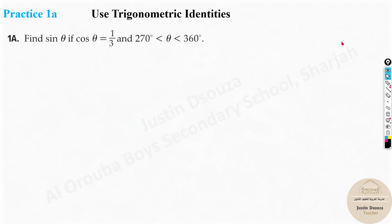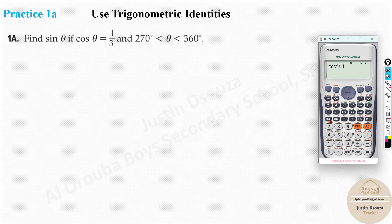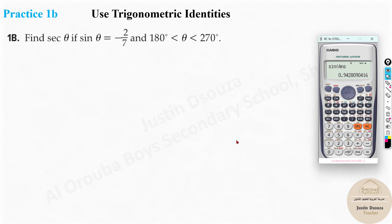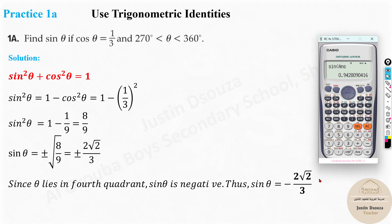Next problem: θ is in the fourth quadrant (270°–360°), and cos θ = 1/3. Using the calculator: cos⁻¹(1/3) ≈ 70.52°, saved as ANS. Then sin(ANS) ≈ 0.9428. The exact answer is 2√2/3. Since sine is negative in the fourth quadrant, the answer is −2√2/3, and indeed −2√2/3 ≈ −0.9428.